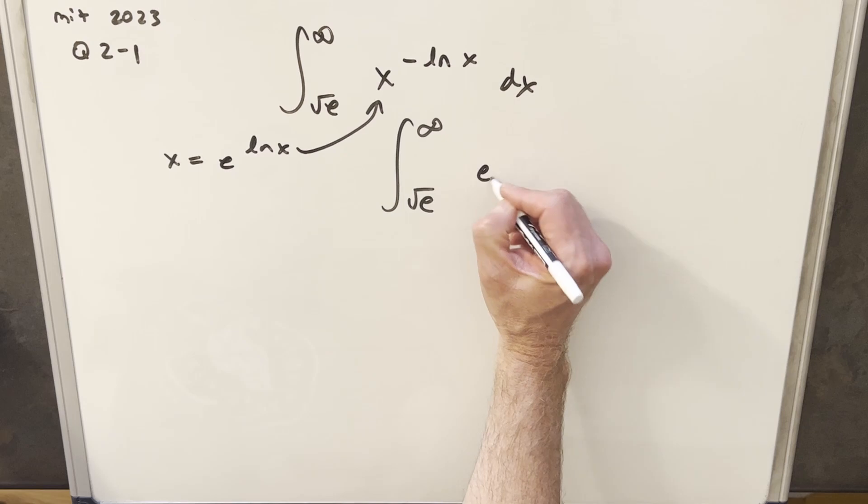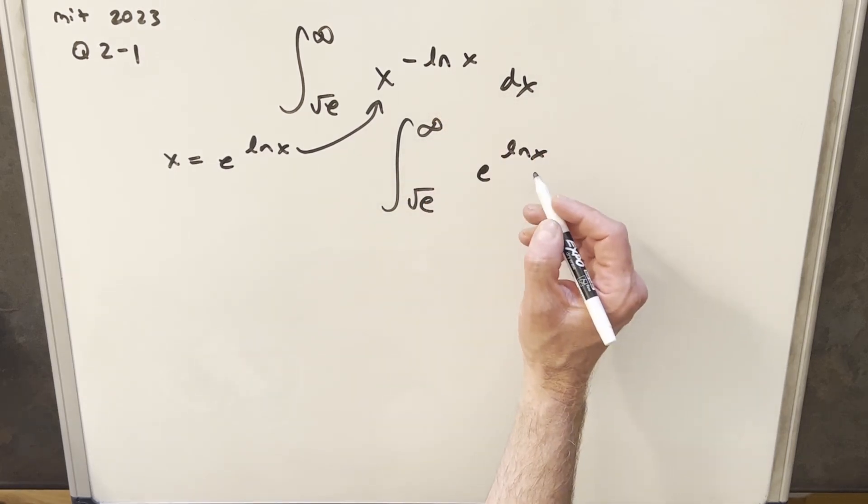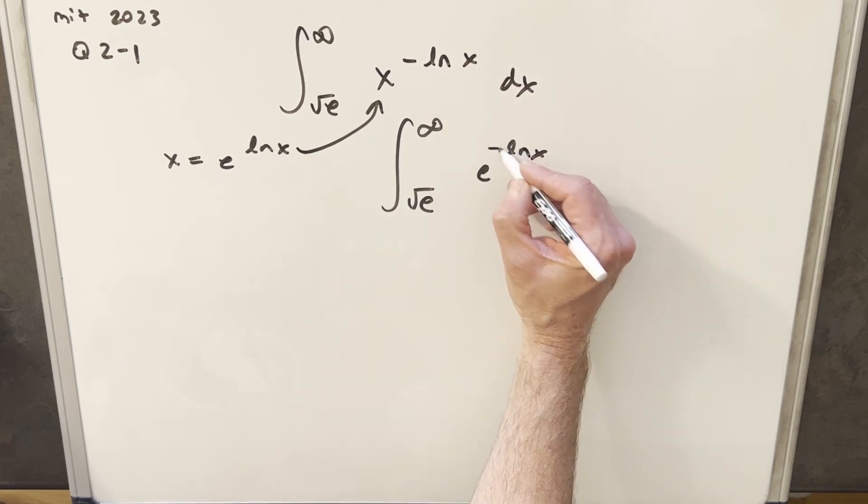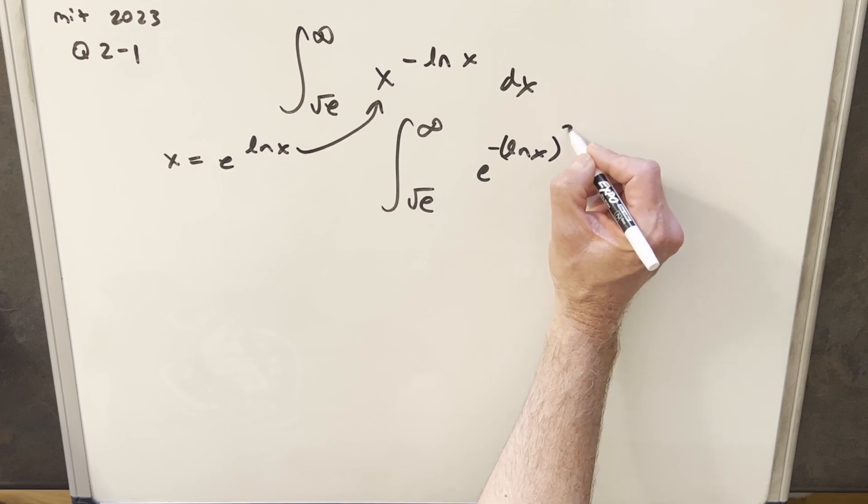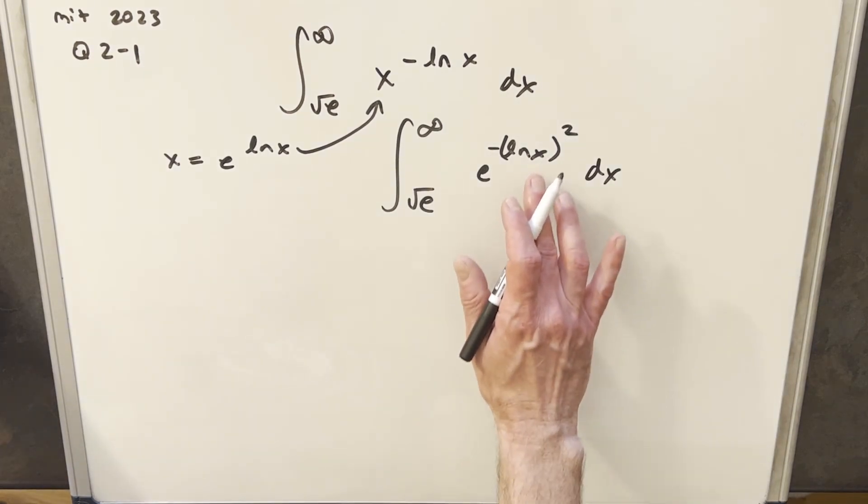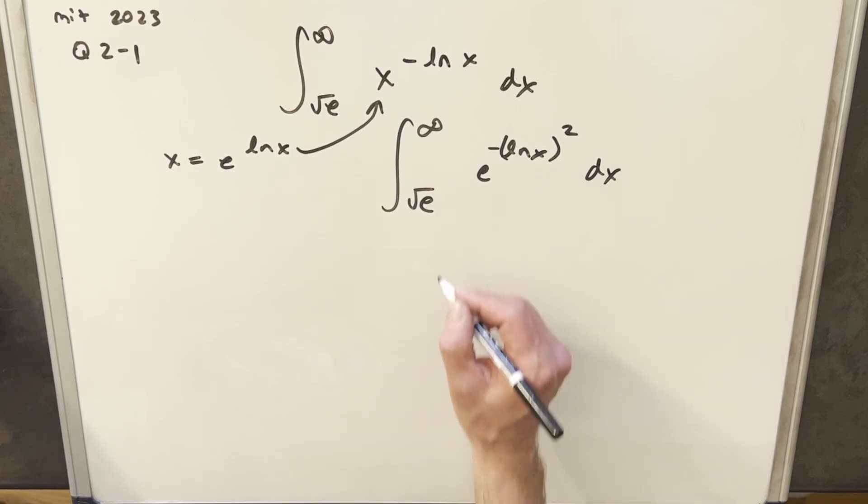So we'll write in here our e to the ln x, but then notice we're raising it essentially to this minus ln x. So if I just, by exponent rules, multiply the exponents, we can write this as minus ln x squared. Okay, that looks pretty good, because we like e as the base, but then this exponent is still kind of scary. So what I'm going to do is let's just do a u substitution and try to clean this up.